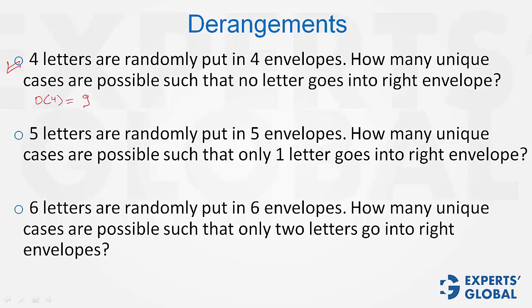Look at the second question here. Only one goes into right envelope. So, first, select the right letter, 5C1, that is 5. And now, the other 4 can be arranged, rather deranged, in d4 ways. And therefore, 5 into d4 is the answer. d4 is 9. So, the answer is 5 times 9, 45.